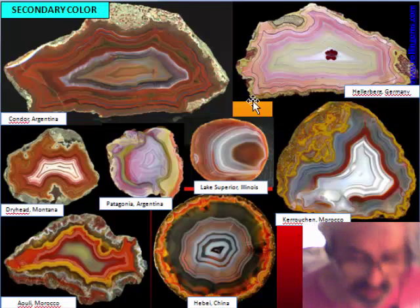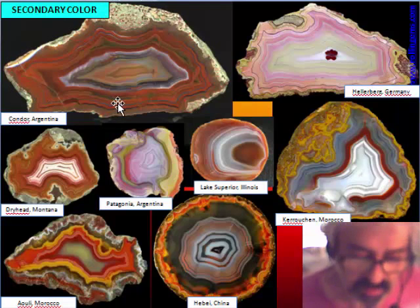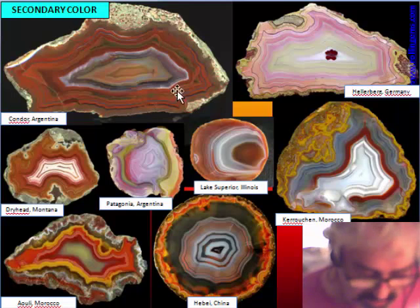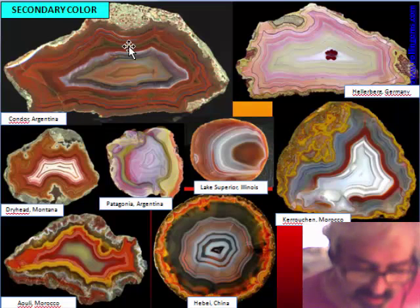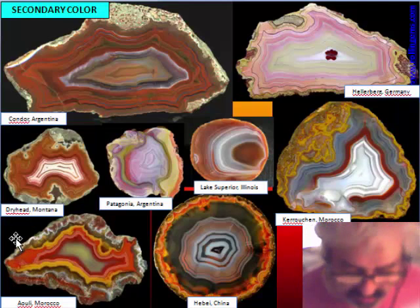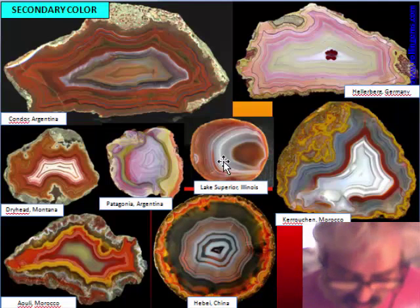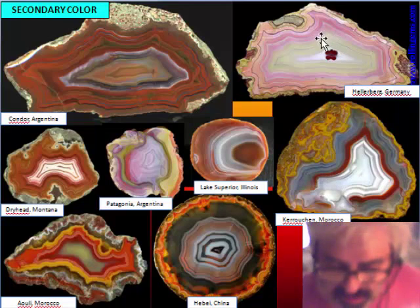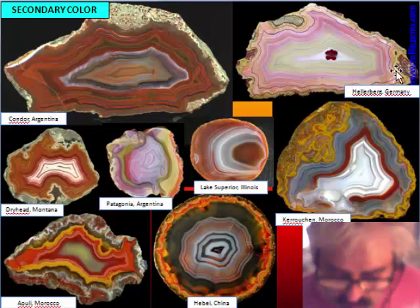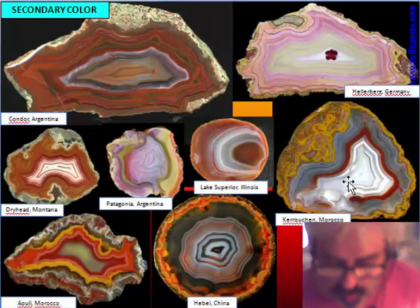Secondary colors are concentrated toward the edge of the nodule. This is a typical condor agate with a lot of red around. Most secondary colors are in the hue of red. This is dry head agate, this is an owl agate from Morocco also in the hue of red and orange, this is a nugget from China — all secondary color. Patagonia, Lake Superior, Kerushin, a German nugget — all have the color concentrated toward the outside and the inside is usually white or transparent.